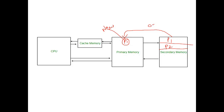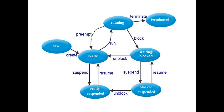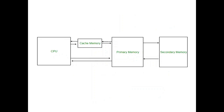The operating system picks the programs from secondary memory, loads them into main memory, and those processes that are under creation come under the new state. After process creation, these processes will now go to the ready state for execution. The processes will be brought from secondary memory to main memory for execution.